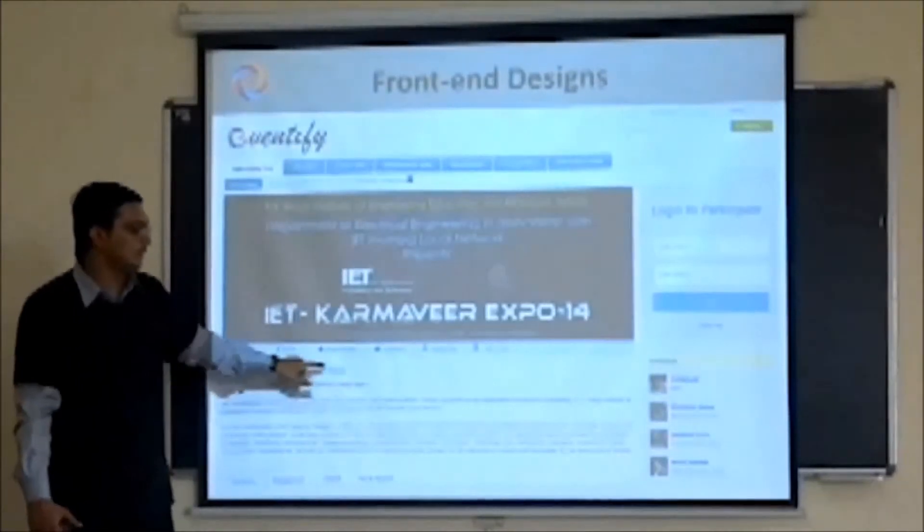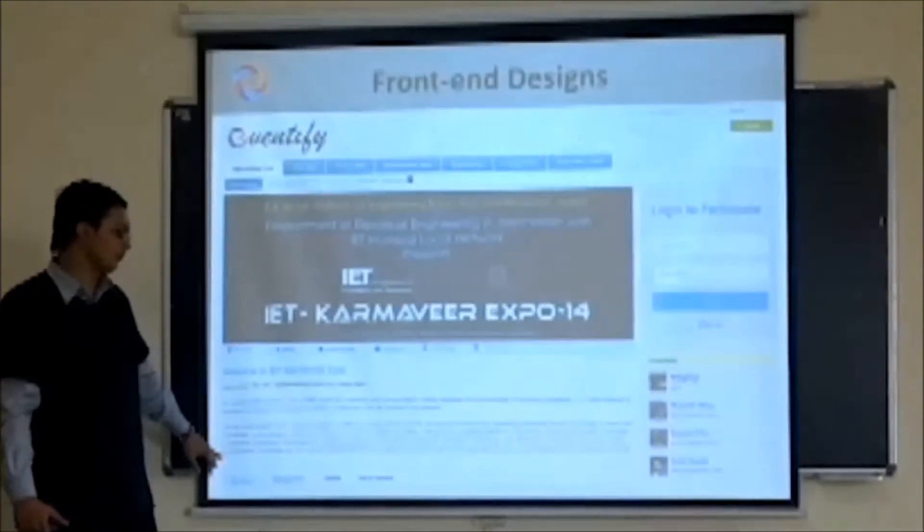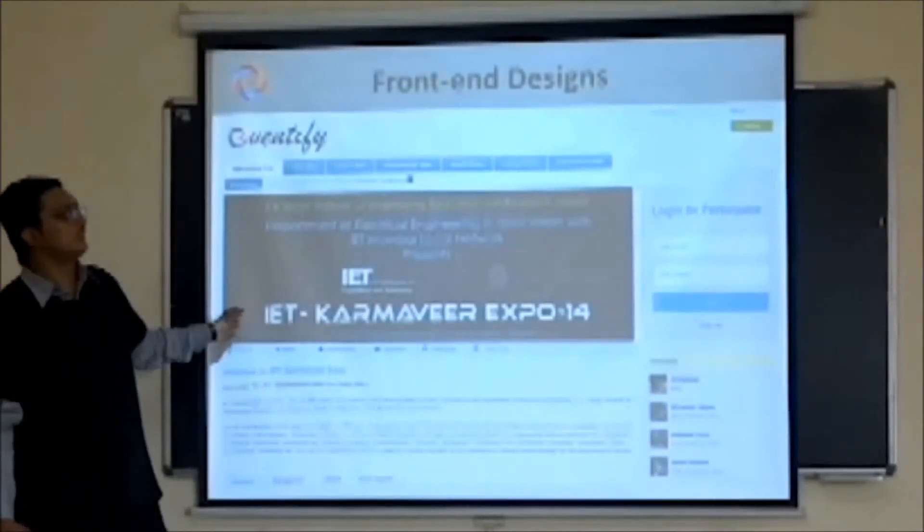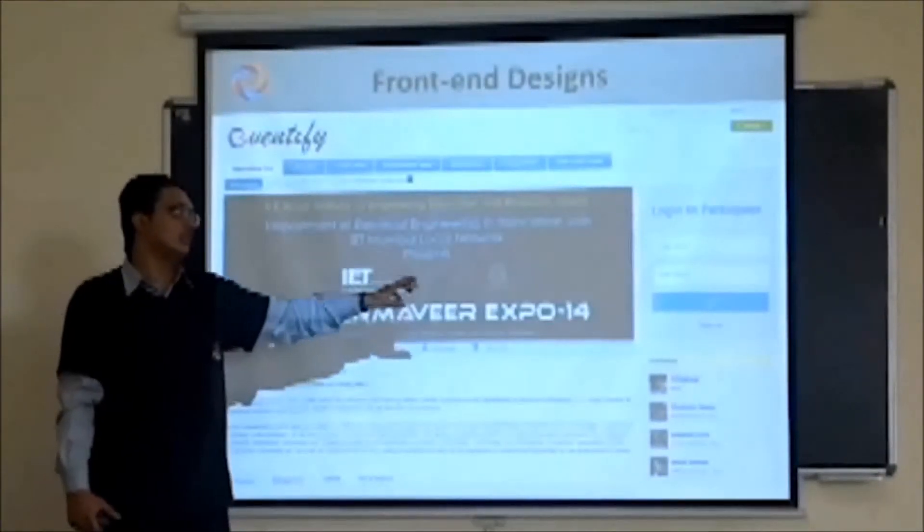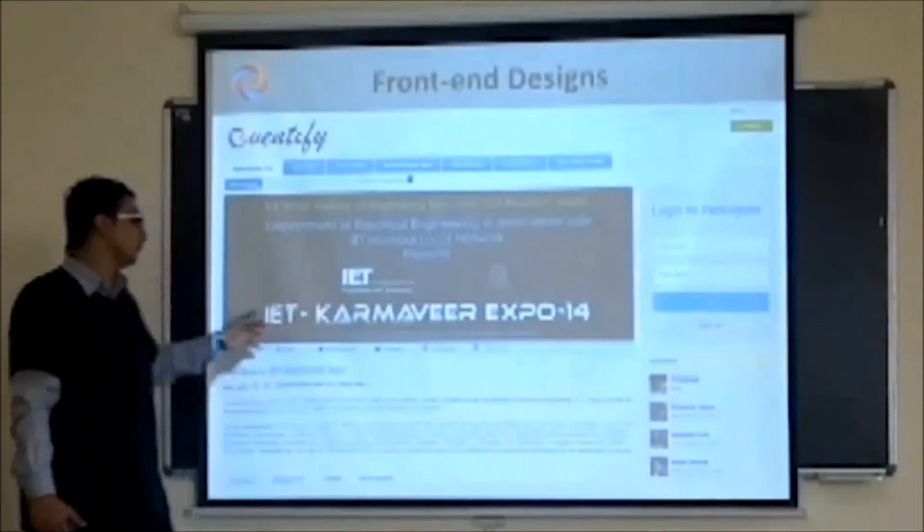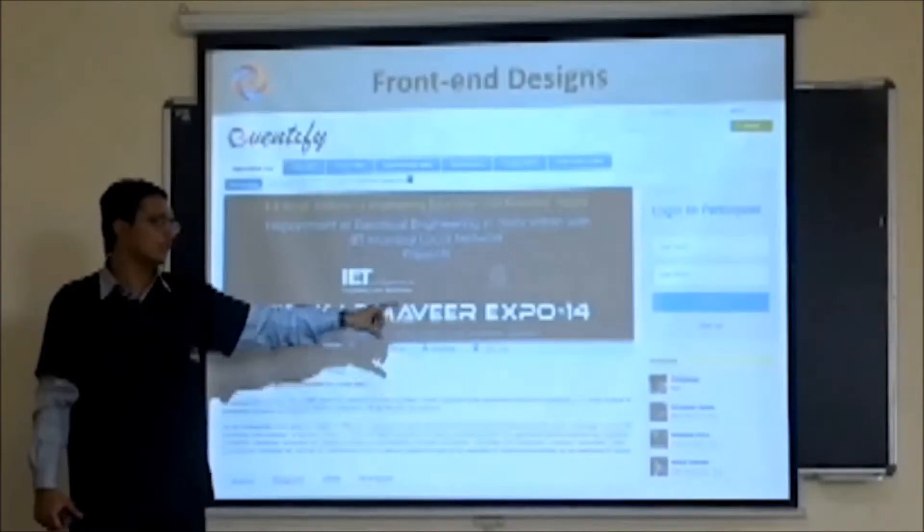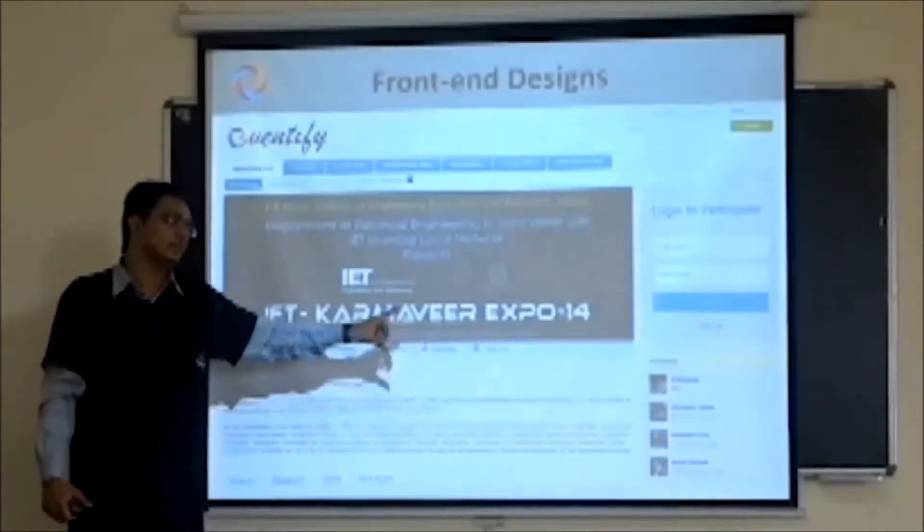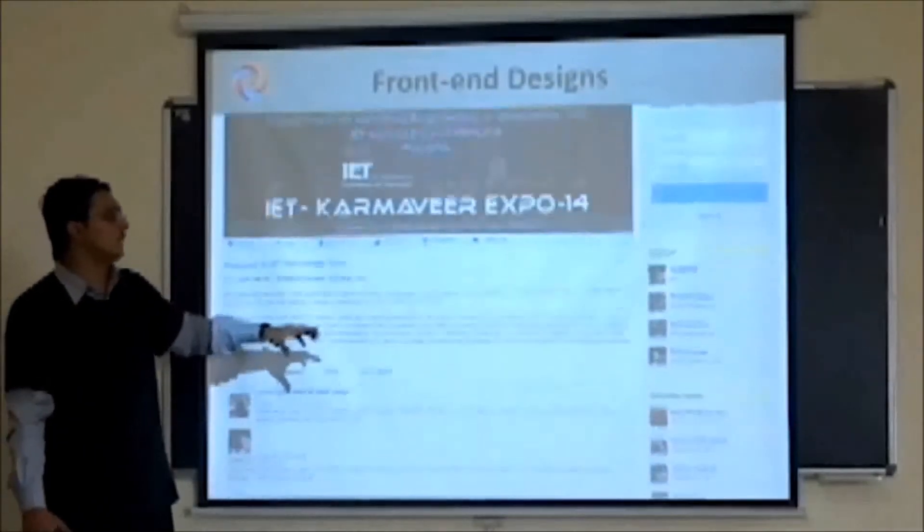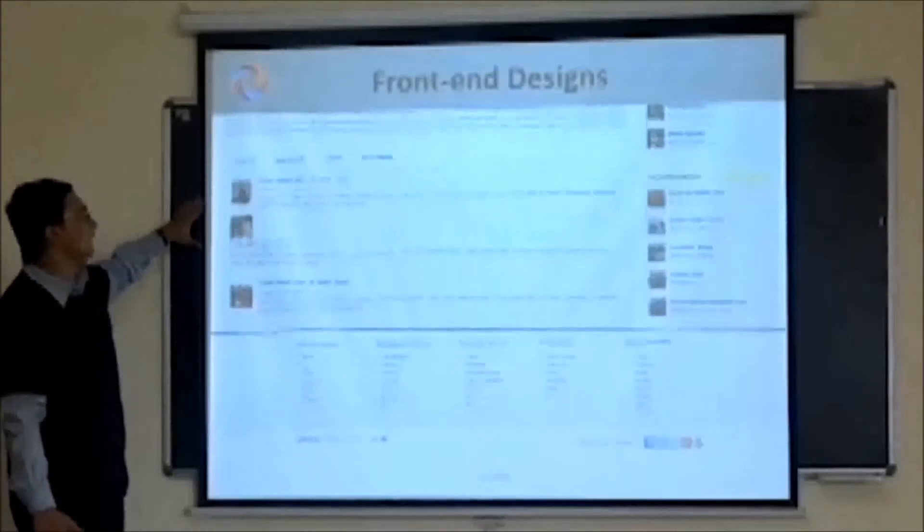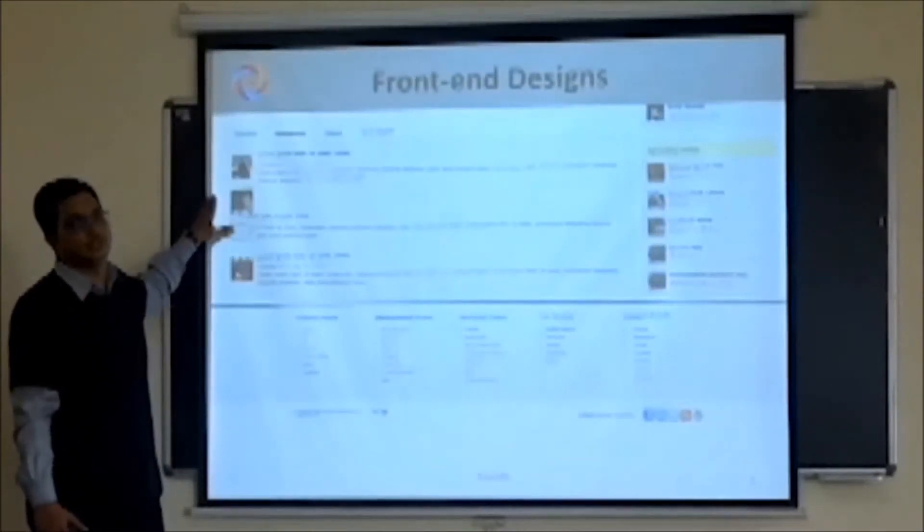Users can select featured events from this banner and all the details will be shown below in this panel. Towards the left of this panel, there is a Login Panel and Sign Up Panel. Users can log in or sign up in order to register for a particular event. Below the Login and Sign Up Panel, there is a panel of featured events where all the featured events will be displayed. If you scroll this page down, you can see that there is a panel from which users can browse events on the basis of their genre.